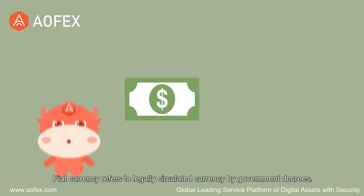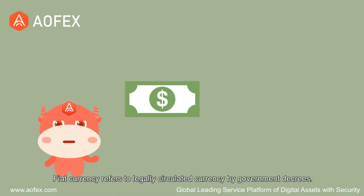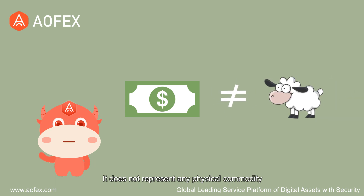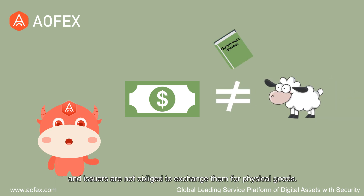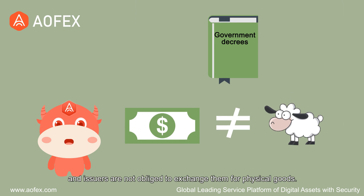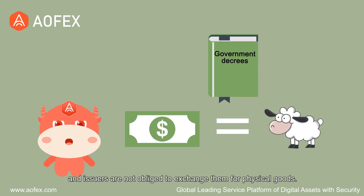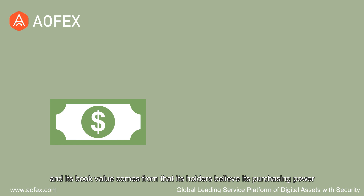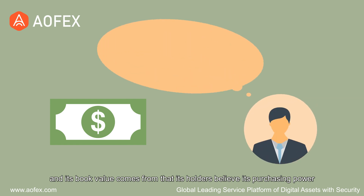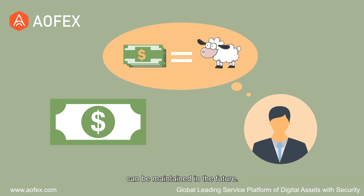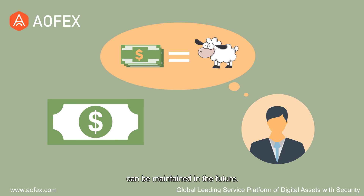Fiat currency refers to legally circulated currency by government decrees. It does not represent any physical commodity and issuers are not obliged to exchange them for physical goods. Fiat currency is free of value and its book value comes from that its holders believe its purchasing power can be maintained in the future.